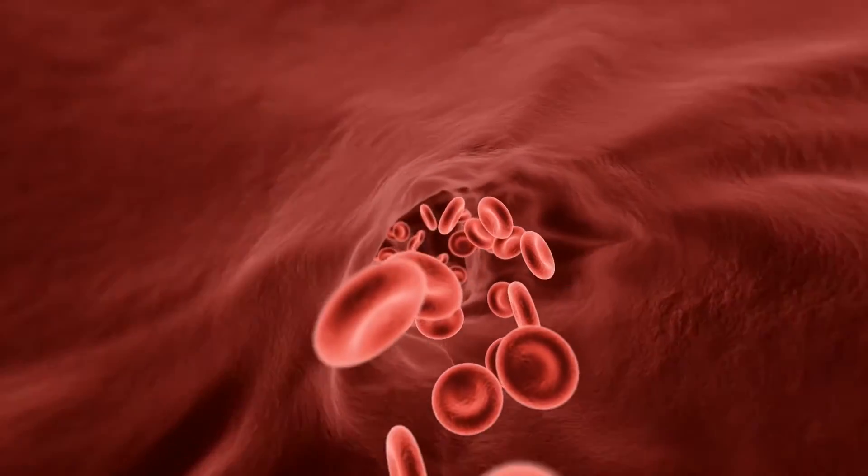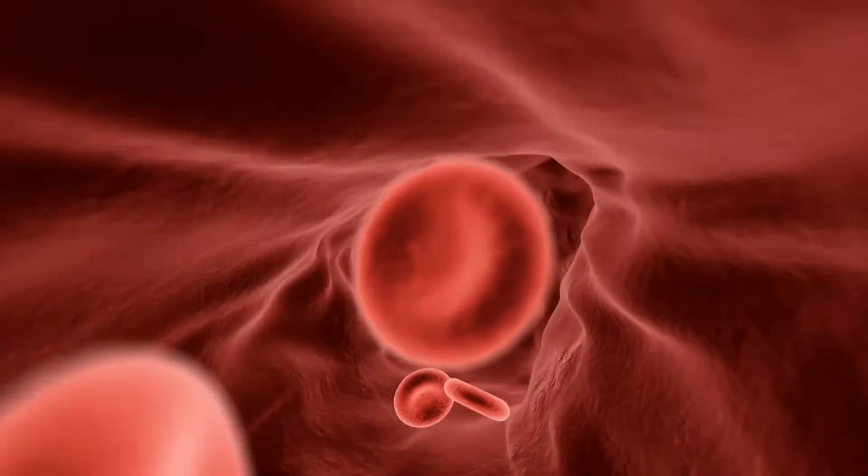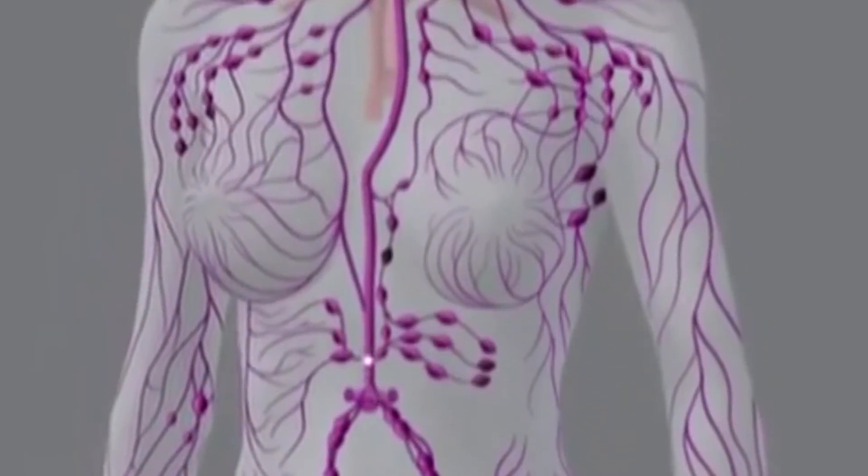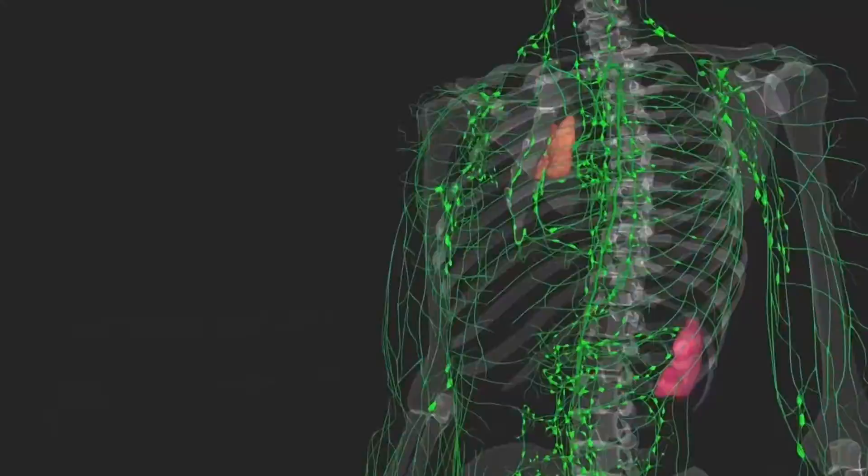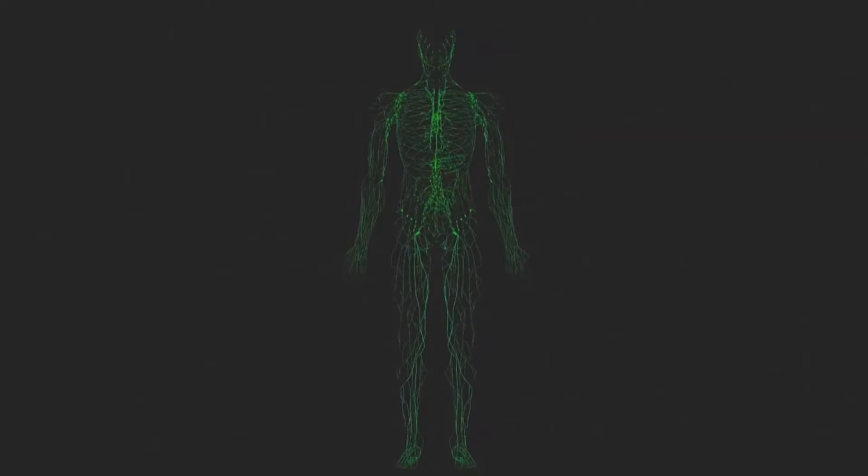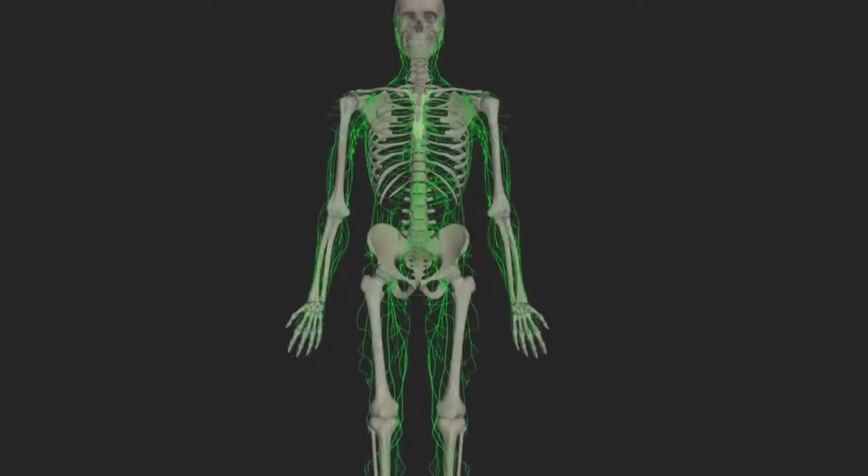There are about 600 lymph nodes in the body. These nodes swell in response to infection due to a buildup of lymph fluid, bacteria, or other organisms and immune system cells.